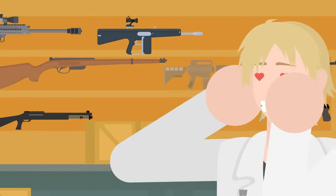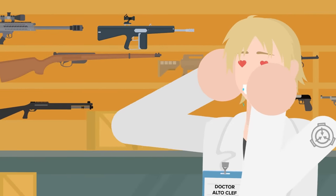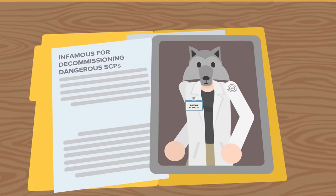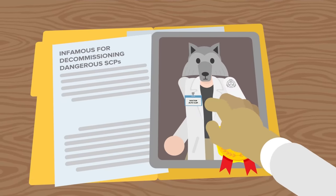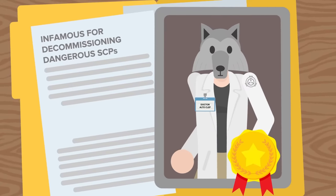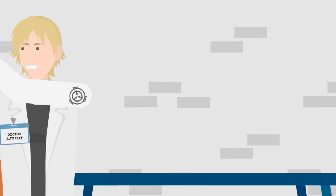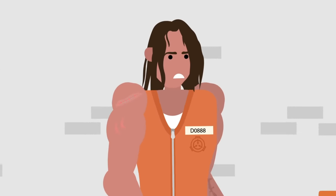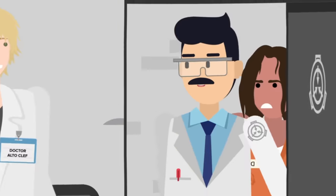During his time there, Clef became well known for being somewhat of a gun enthusiast as well. In fact, he earned his own brand of infamy for his habit of brutally decommissioning dangerous SCPs. In other words, Clef established himself as the Foundation's go-to executioner.